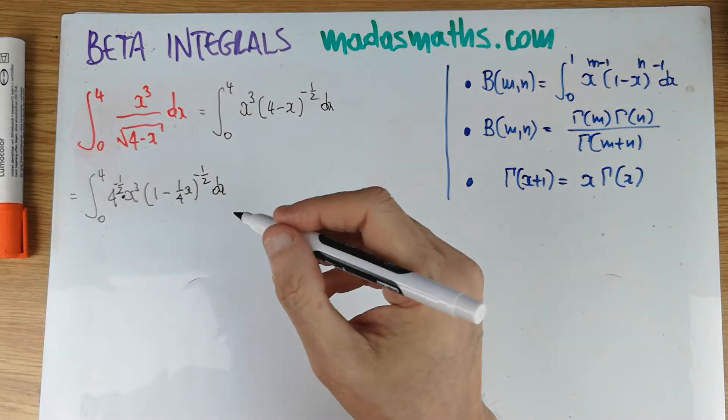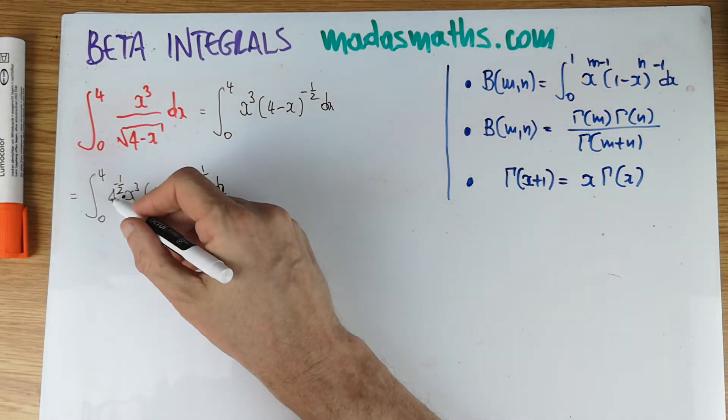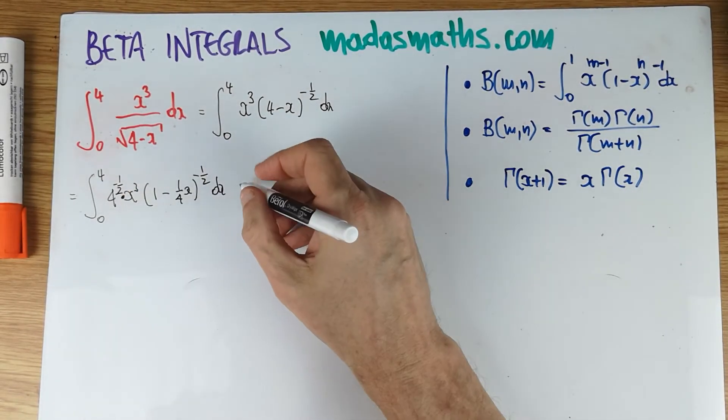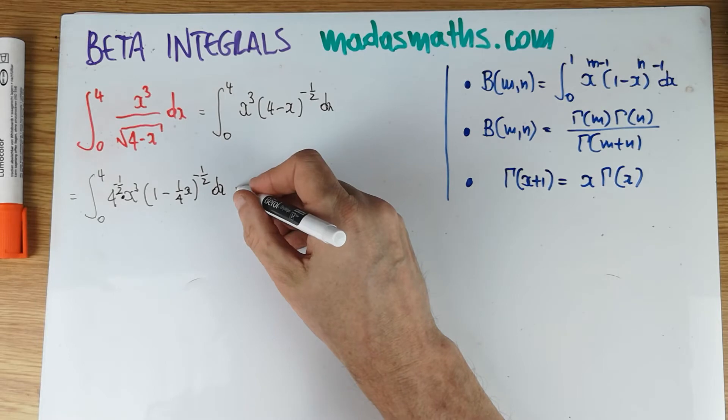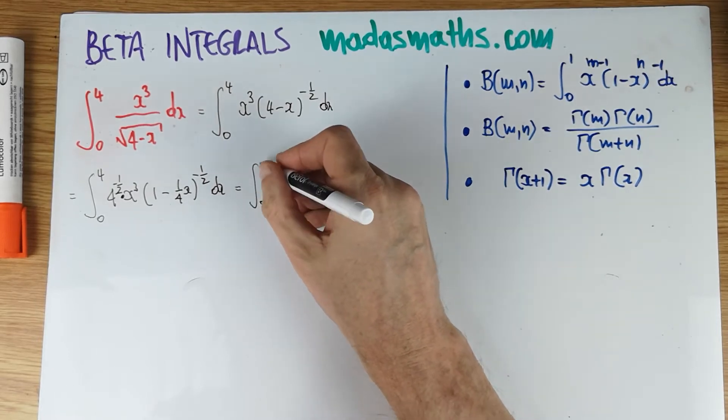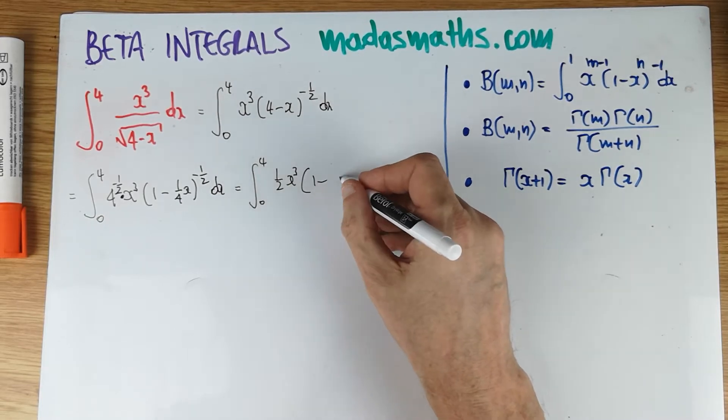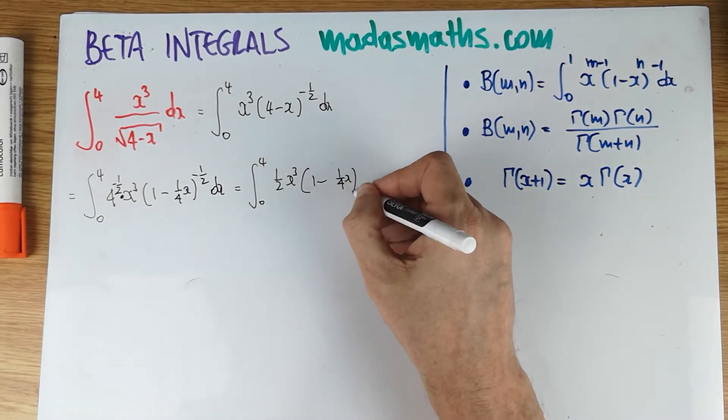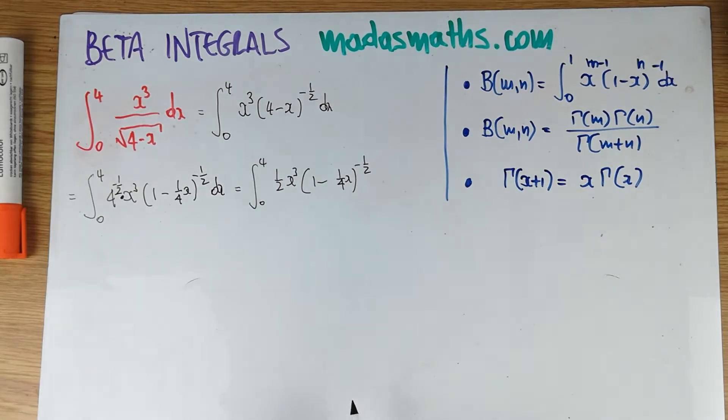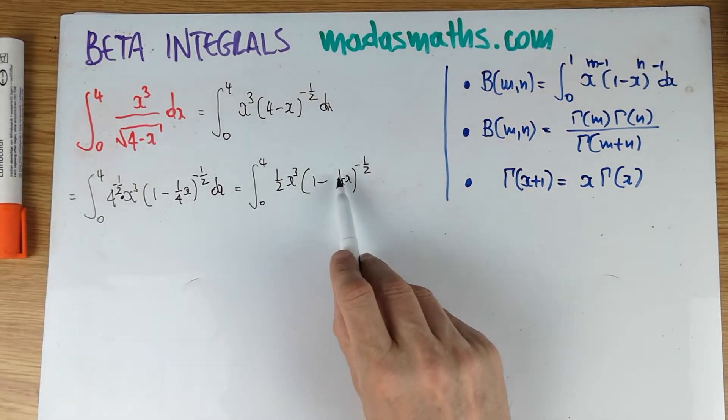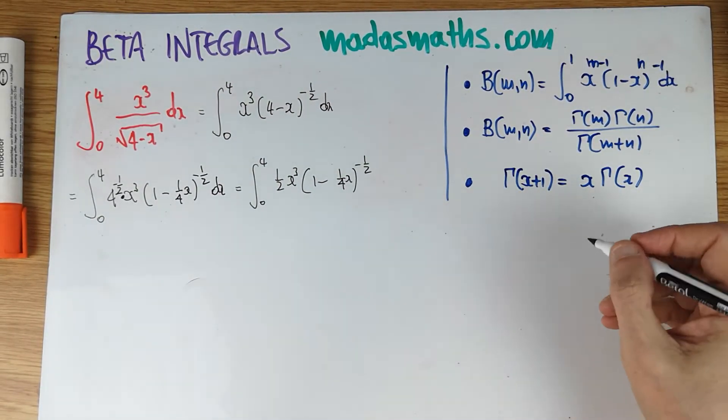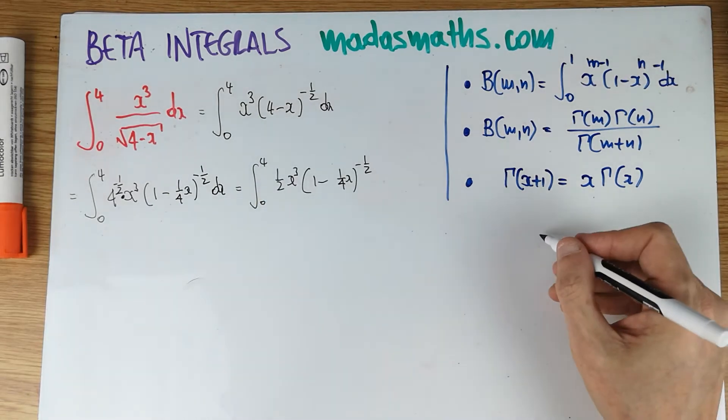And what is that? That's the square root of 4. So it's going to be a half times the integral from 0 to 4, x cubed times 1 minus a quarter of x to the power of minus a half dx. Still not a beta function because we've got this quarter, but this is easy to sort out. And I think this will sort out the limits as well.